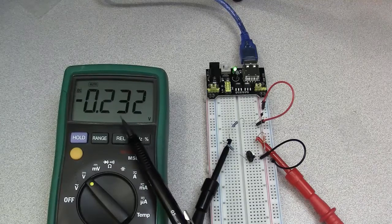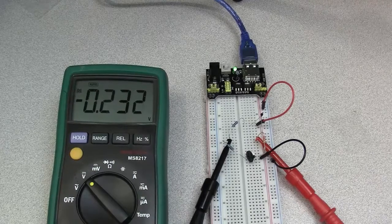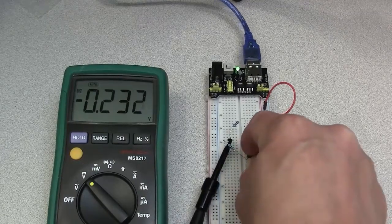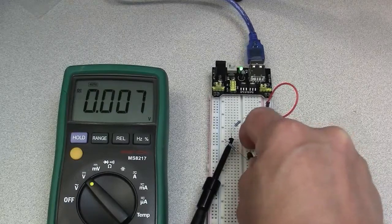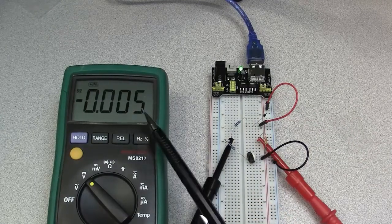Currently, I'm reading negative 0.23 volts. I can change this voltage by adjusting the knob position on my potentiometer. So I can change this knob to get about zero volts output.